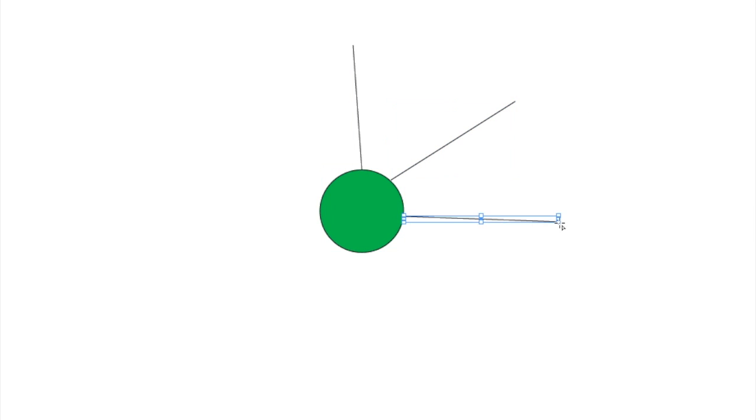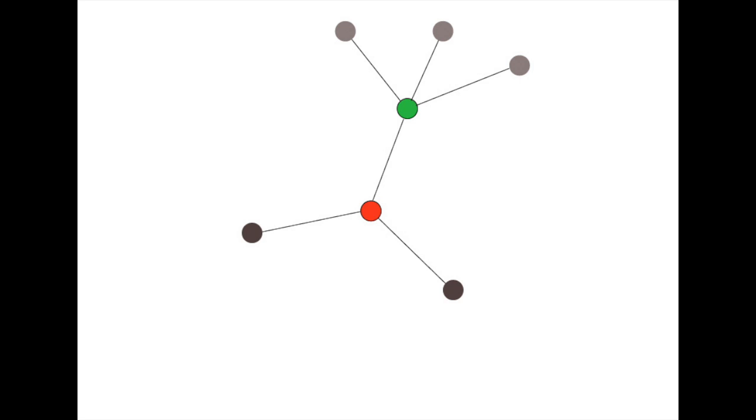A node can have a high eigenvector centrality if it has many connections in the network, or like in the example, if it is connected to individuals who have many connections.